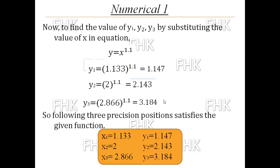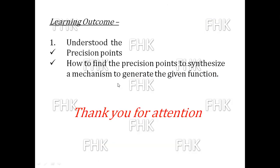So this is our solution. The following 3 precision points satisfy the given function y = x^1.1: when x1 = 1.133, y1 = 1.147; when x2 = 2, y2 = 2.143; and when x3 = 2.866, y3 = 3.184. These are the 3 precision points. At the end of this session, students, you can understand what precision points are and how to find them to synthesize a mechanism — generally a 4-bar mechanism — to generate a given function. Thank you for watching this video.